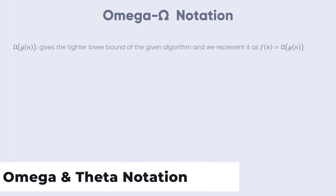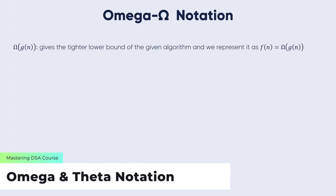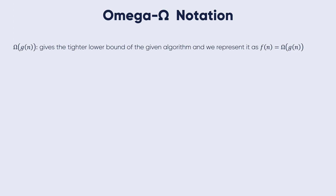Similar to the Big-O discussion, Omega notation gives the tighter lower bound of a given algorithm, represented as f(n) = Ω(g(n)). So Omega notation gives the lower bound and Big-O notation gives the upper bound of an algorithm or function.